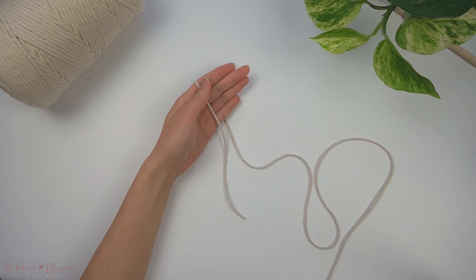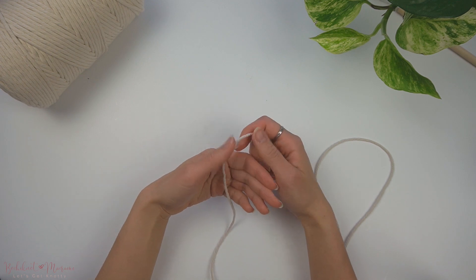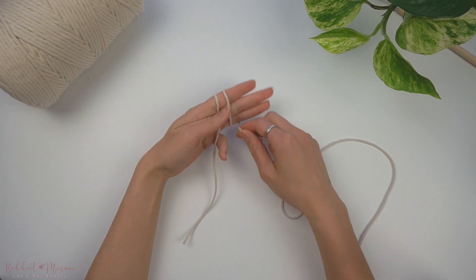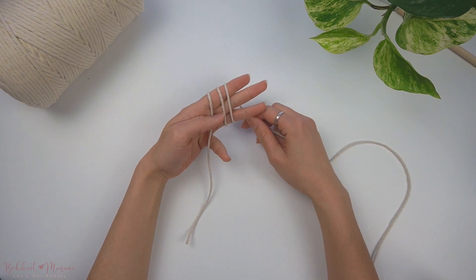So to begin, take one end of the cord and start wrapping it around the three fingers on your non-dominant hand like so, two times.